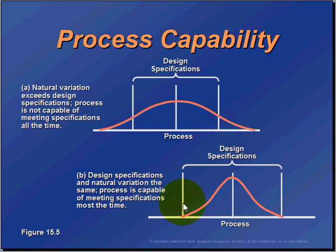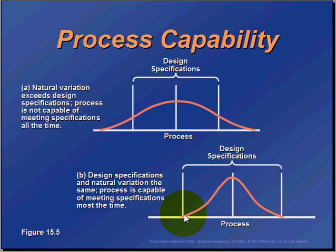In this case, we have the same type of design specification, but we have a process this time that is capable. We're going to see that the values that fall in this normal random distribution are going to fall within our design specification most of the time.